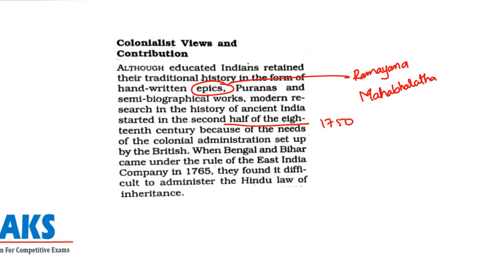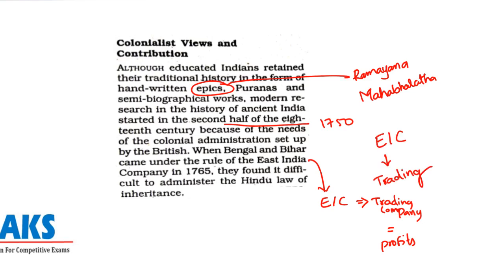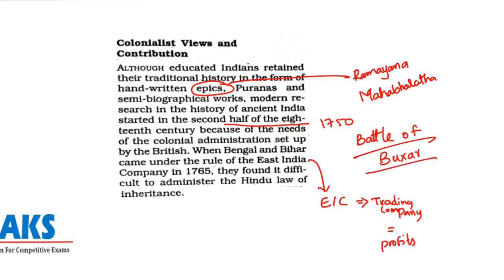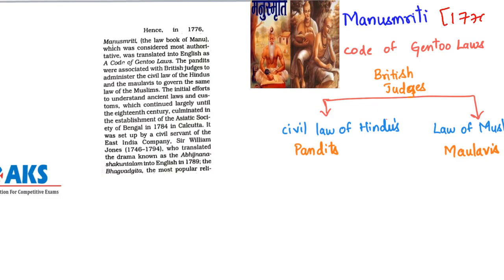We know that the East India Company came to India as a trading company, mainly to reap profits. But after the Battle of Buxar, when they also gained administrative rights, they found it difficult to administer a foreign country whose rules and customs they did not understand. Administration now involved inheritance of land and property, so they found it difficult to administer Hindu law of inheritance. Hence in 1776 — almost nine years after the Battle of Buxar in 1765 — the first book they translated into English was the Manu Smriti.